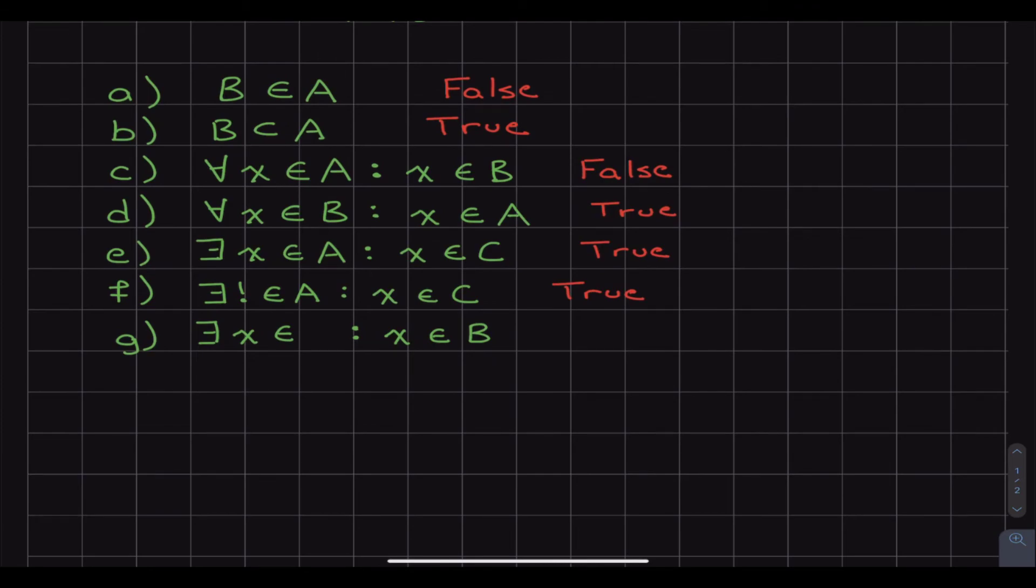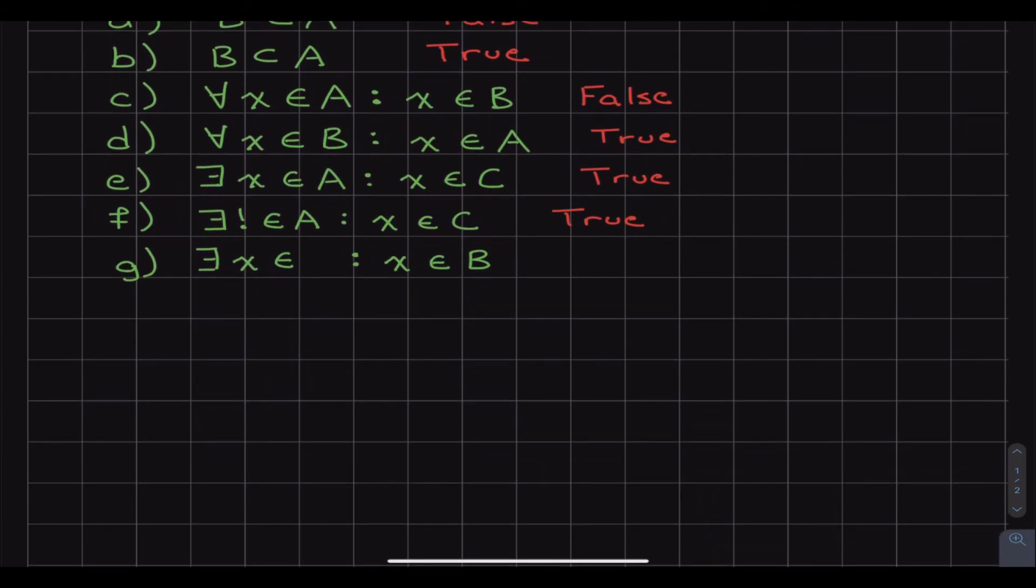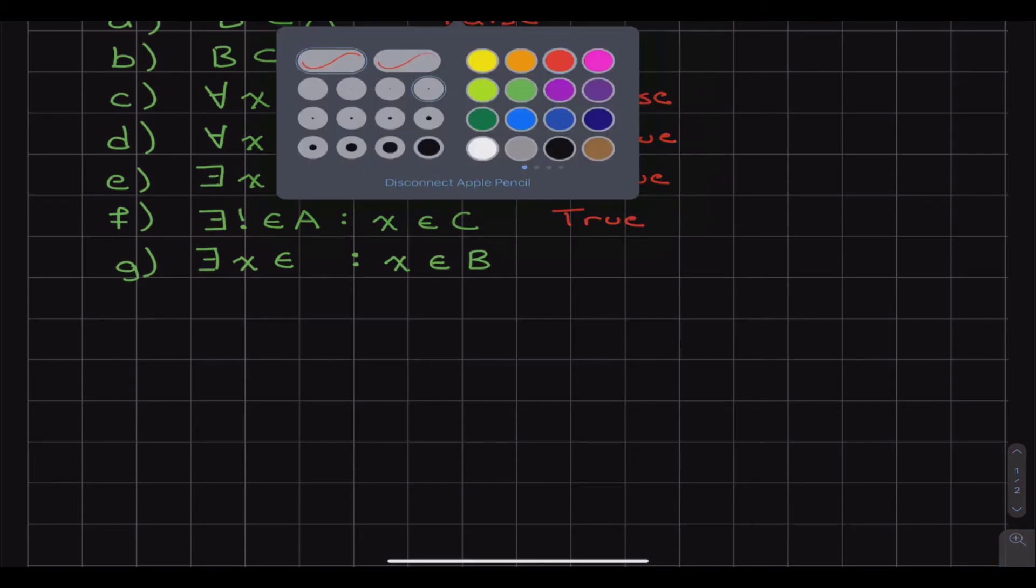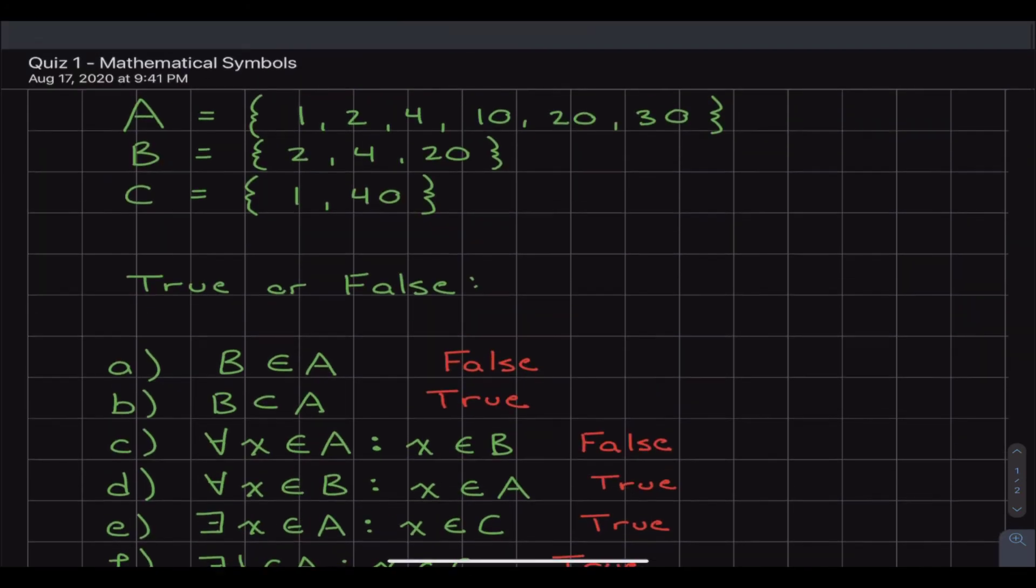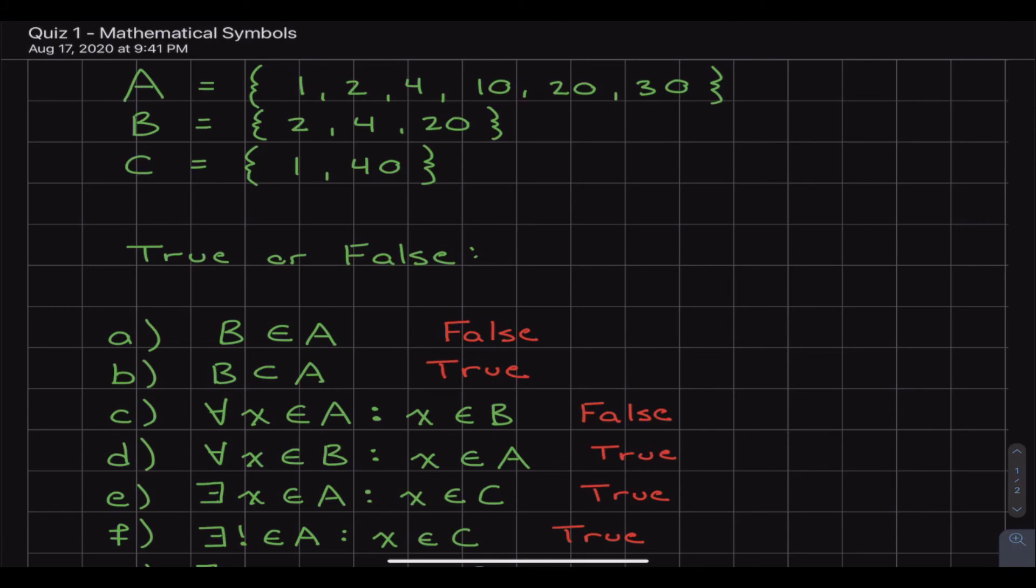And then the last question, it kind of goes back to what we had before. And it looks like I got too crazy and decided to erase more than I should have. This is a C right here. So if we were just to read this out, it says that there exists an element in C that also exists in B. So if we look up here, there exists an element in C. So if we look at C, we got 1 and 40.